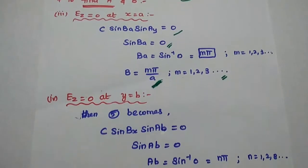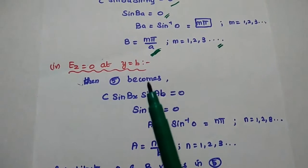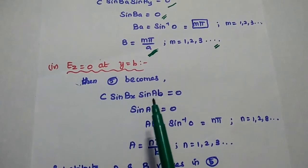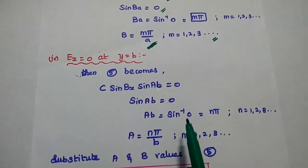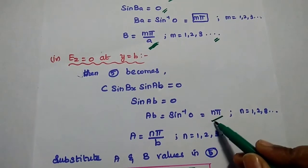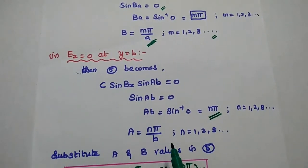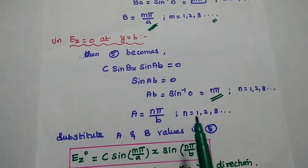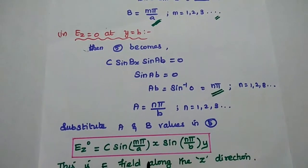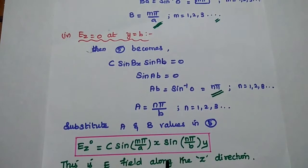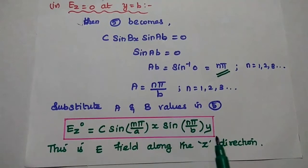From the fourth boundary condition, a = n pi over b, where n = 1, 2, 3, etc. Substituting the values of a and b into the fifth equation, the EZ field component for TM waves is: EZ = C sin(m pi over a · x) sin(n pi over b · y). This is the EZ component for TM waves.